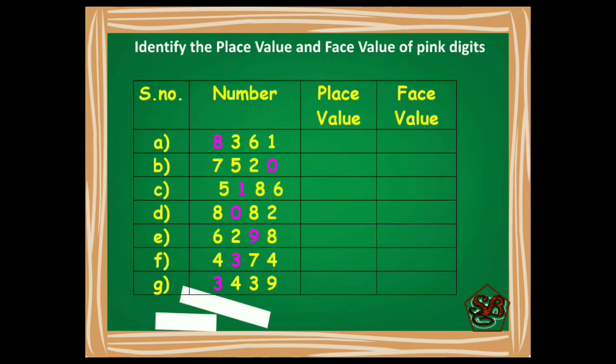Let's do this exercise to make the concept stronger and understand it better. In this question we have to identify the place value and face value of pink digits. The first number given to us is 8361. Let's first understand its place value.